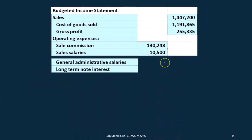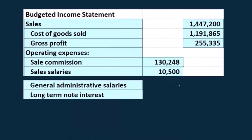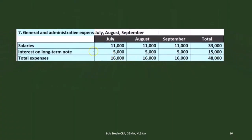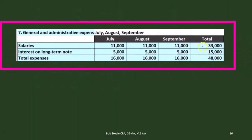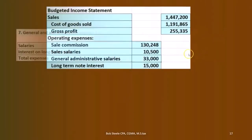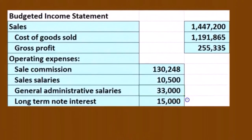Then we have the general administrative salaries and the long-term note interest, and we're going to pull that from here. We did total up the general administrative for $33,000 and the $15,000. We're just summing up the full quarter, which is the three months in this case — so here's the $33,000 and the $15,000 for general administrative and long-term note interest.